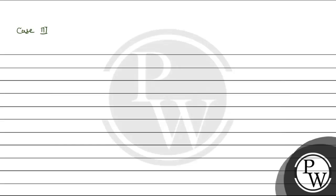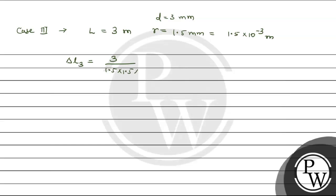Case 3: L = 3 meters, diameter = 3 mm, so r = 1.5 mm = 1.5×10⁻³ meter. Elongation ΔL₃ = 3 / (1.5 × 1.5 × 10⁻⁶) = 300 / (15 × 15 × 10⁻⁶). After cancellation, ΔL₃ = 4/3 × 10⁶ = 1.33×10⁶. This is the elongation for Case 3.